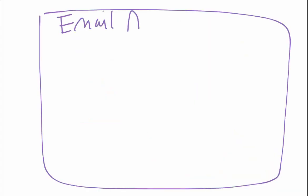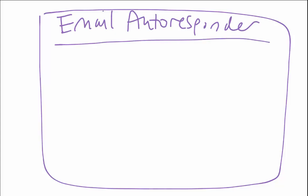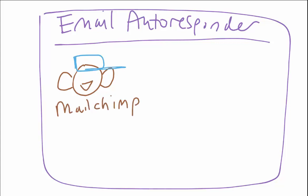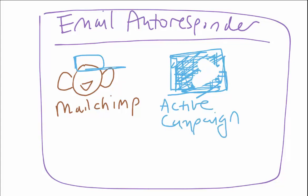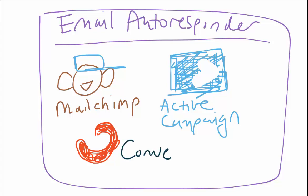This Zapier setup is a one-time thing — she sets it up once and it's good to go. After that, it runs every 15 minutes or however frequently she wants. Now she's in her email autoresponder. You can use whichever one you like, since Zapier integrates with many — MailChimp, ActiveCampaign, ConvertKit — whatever one you have, Zapier will be able to work with it.